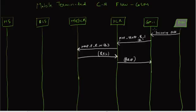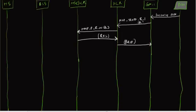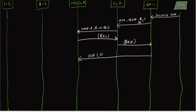Once the gateway MSC knows the MSRN — the routing number of the mobile — it knows where to send the ISUP Initial Address Message. So it sends an ISUP Initial Address Message to the MSC VLR where the current mobile is located.